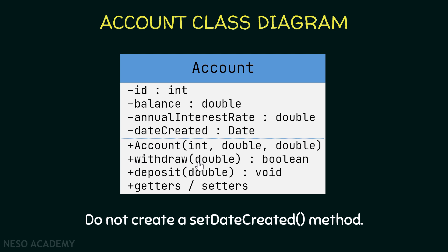We have a public method called withdraw that takes a double as a parameter and returns a boolean. It tries to withdraw an amount from the account by subtracting the parameter from the balance. We must ensure the balance is never negative: if the balance is greater than or equal to the amount, we update the balance and return true; otherwise we return false.